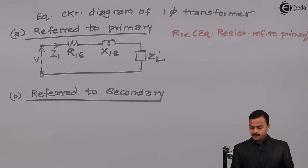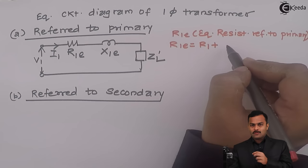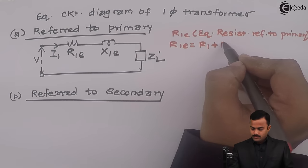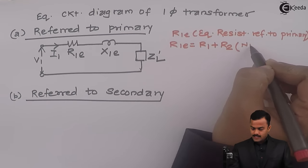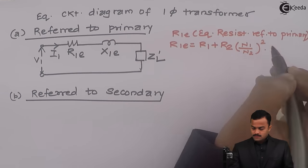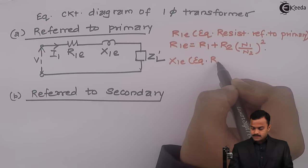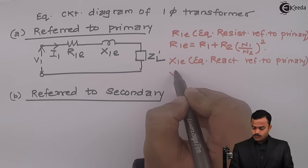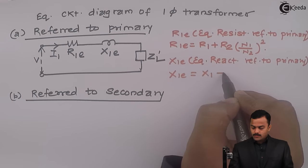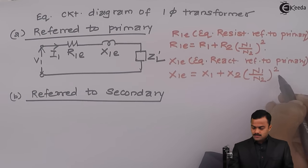So I can write R1E — the equivalent resistance referred to primary — as R1 plus R2 multiplied by (N1/N2) squared, since R2 is being referred from secondary to primary. Similarly, X1E, the equivalent reactance referred to primary, is X1 plus X2 multiplied by (N1/N2) squared.